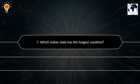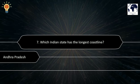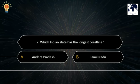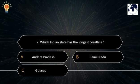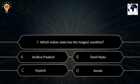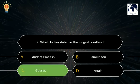Question number 7. Which Indian state has the longest coastline? A. Andhra Pradesh. B. Tamil Nadu. C. Gujarat. D. Kerala. The correct answer is C. Gujarat.